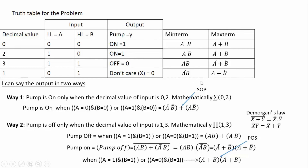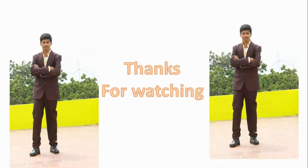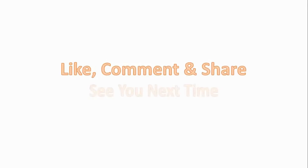Looking at the truth table, the expression for pump on using minterms gives sum of products — focusing on the pump-on cases with minterms. Using maxterms to get the pump-on expression gives product of sums — focusing on the pump-off cases and forming maxterms, then taking their product.